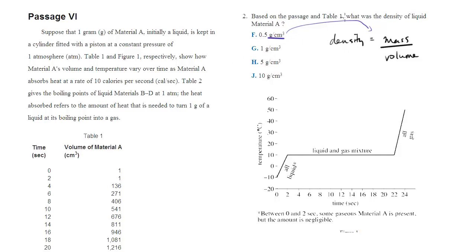So we want to know what is the density of liquid material A based on the passage and table 1. Well, we look in the passage and we see that we have 1 gram of material A. So we know the top of this equation is going to be 1 gram.